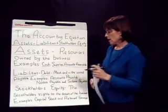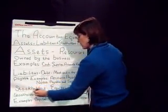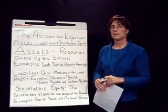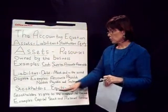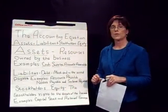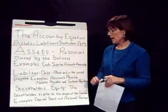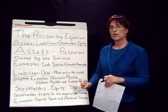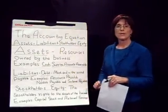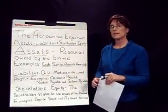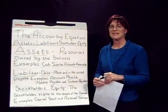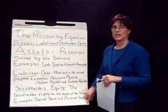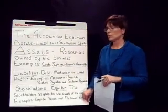And then the third one, stockholders' equity, is the stockholders' rights to the assets of the business. There are really two types of accounts we'll be using with stockholders' equity in the first several chapters: capital stock, which is the capital that's been issued to the shareholders or owners in the business, and retained earnings, which are all the earnings that have been retained in the business since it started, minus any dividends that might have been paid to the shareholders.